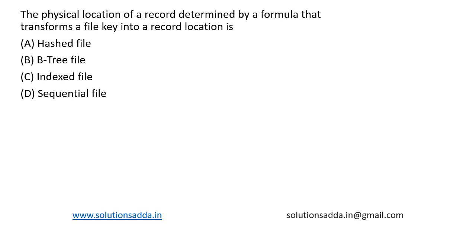This is a question from data structures: The physical location of a record determined by a formula that transforms a file key into a record location is: (A) Hashed file, (B) B-tree file, (C) Indexed file, or (D) Sequential file.